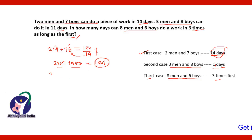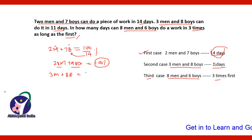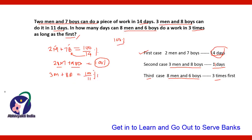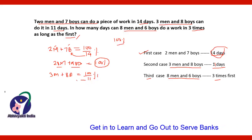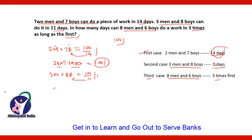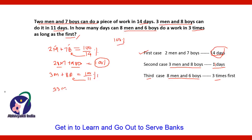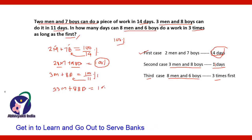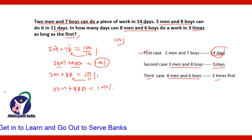In the second condition, 3 men and 8 boys work together and complete the work in 11 days, meaning in 1 day they finish 100/11% of the work, since we are taking total work as 100%. Multiplying both sides by 11 gives 33 men + 88 boys = 100% work. So 33 men and 88 boys will finish 100% work in 1 day.